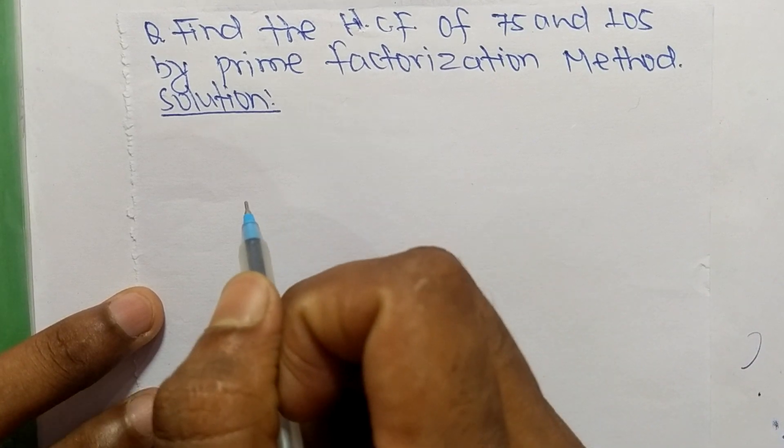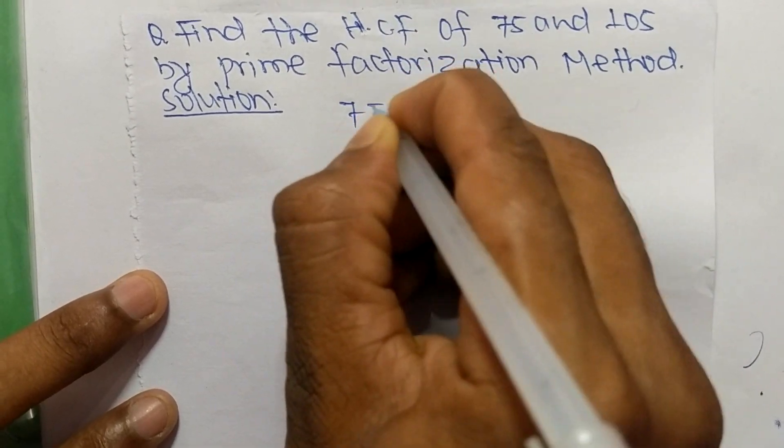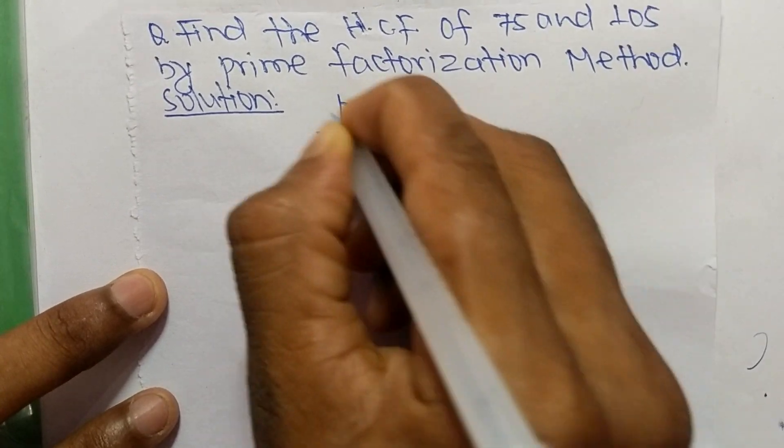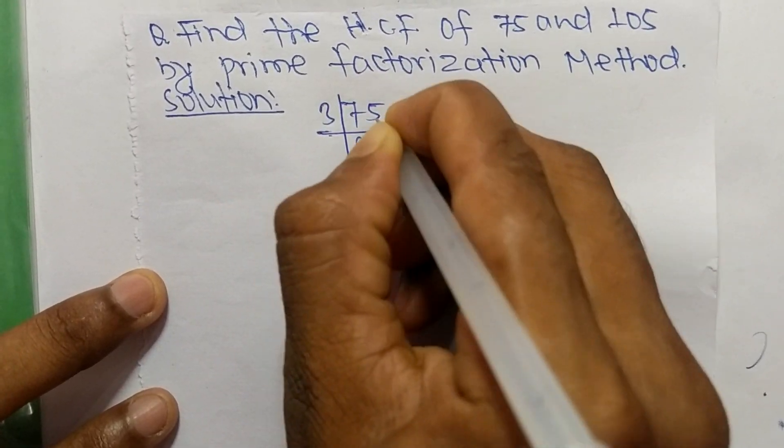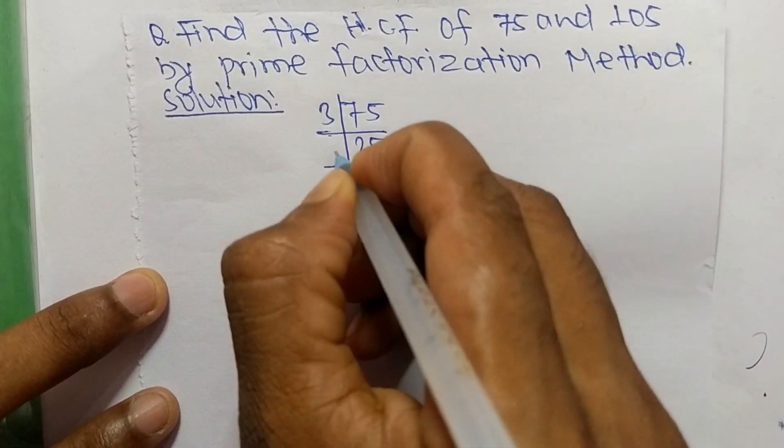First, we find out the prime factors of 75. So it is 3 times 25 equals 75, then 5...